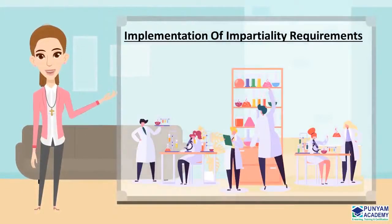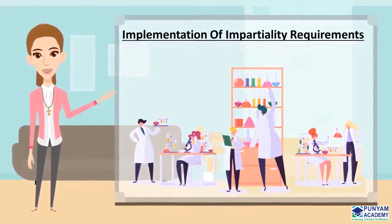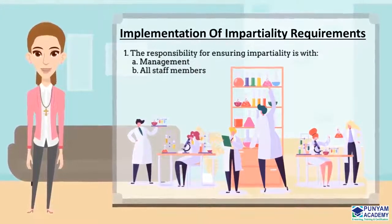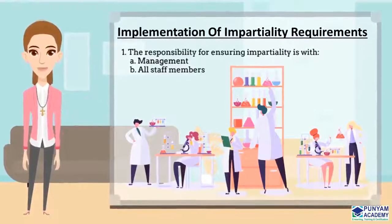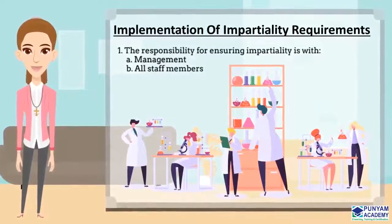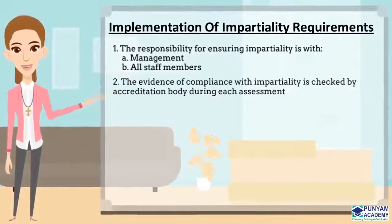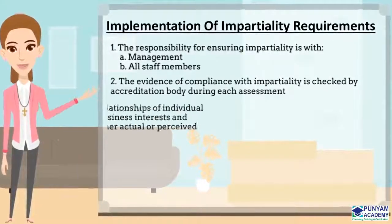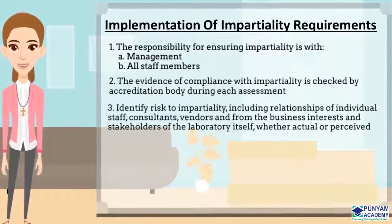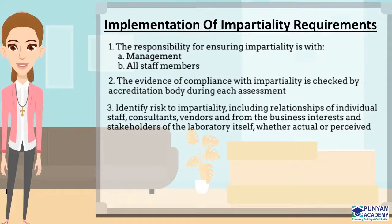Let us now discuss how to implement the impartiality requirement. Some important points to consider while implementing impartiality: (1) The responsibility for ensuring impartiality is with management and all staff members. (2) The evidence of compliance with impartiality is checked by the accreditation body during each assessment. (3) Identify risk to impartiality, including relationships of individual staff, consultants, vendors, and from the business interests and stakeholders of the laboratory itself, whether actual or perceived.